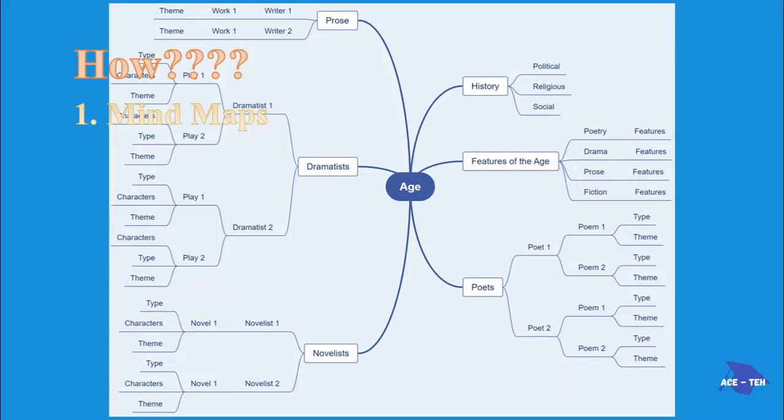Now the second technique is mnemonic strategies. Use acronyms. If you want to remember the three important poets of modern age, Yeats, Eliot, and Auden, use their first letters: YEA.